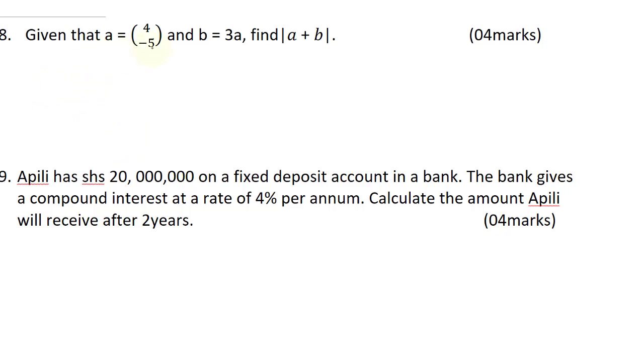Question 8 says, given that A is this and B is this, find the magnitude of A plus B. Now, A is this and B is 3A. Therefore, let's find A plus B, which would be A plus B is 3A. And this is going to be 4A.